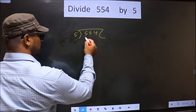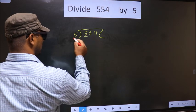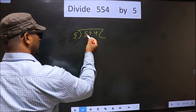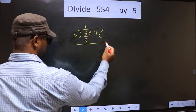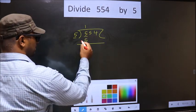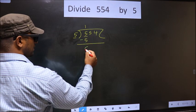Next. Now here we have 5, and here also 5. When do we get 5 in the 5 times table? 5 once is 5. Now subtract: 5 minus 5 equals 0.